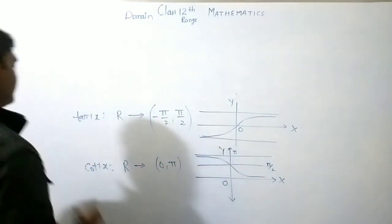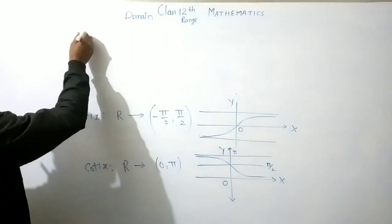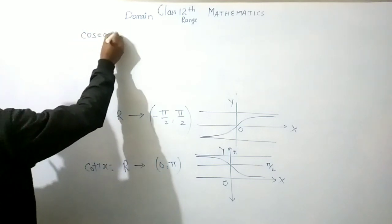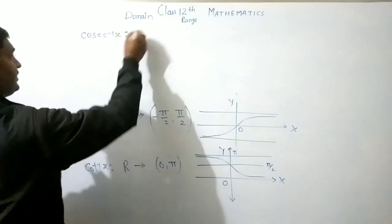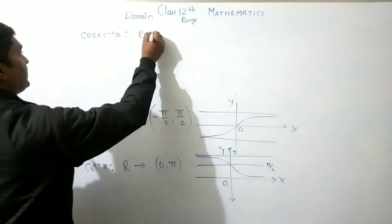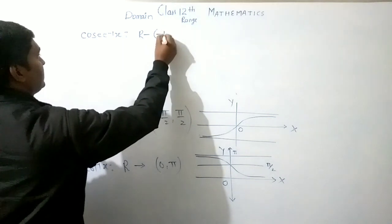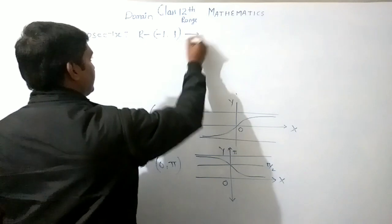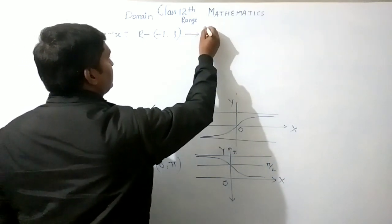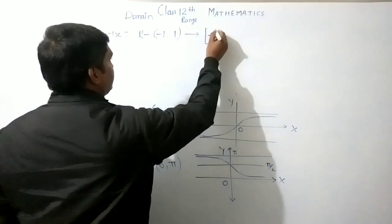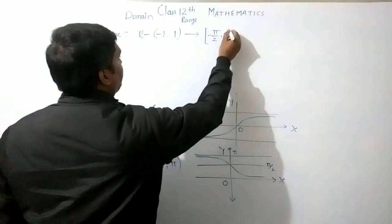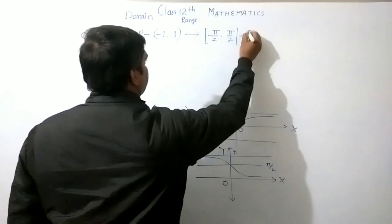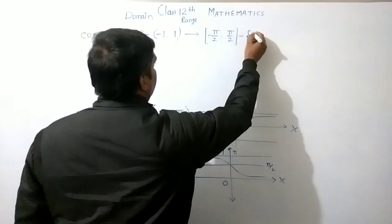Next function: cosec inverse x. Domain: R minus [-1, 1]. Range: closed interval [-π/2, π/2], except 0.